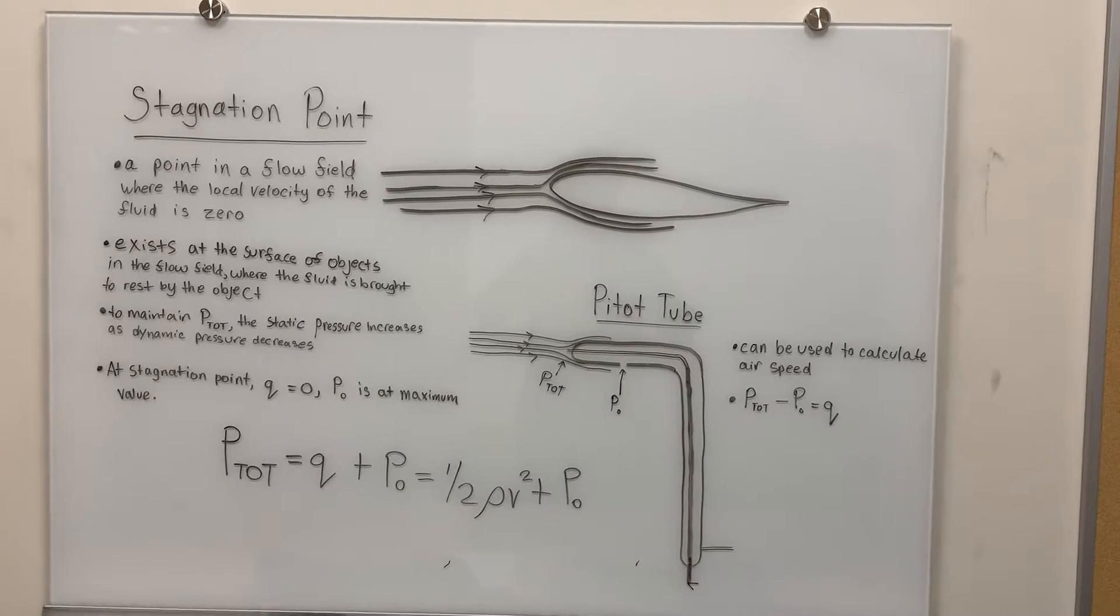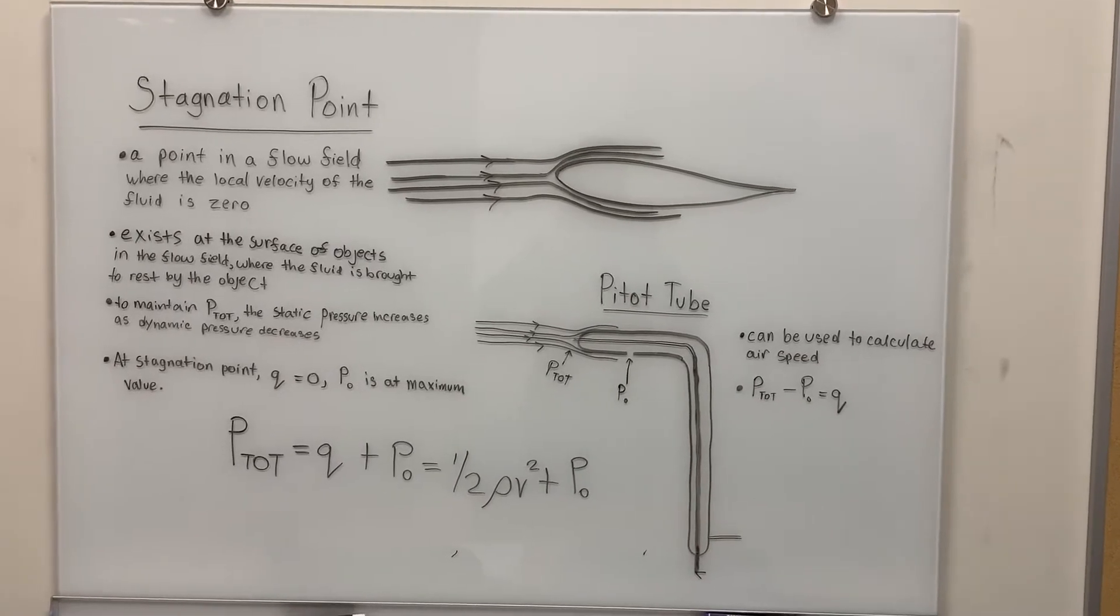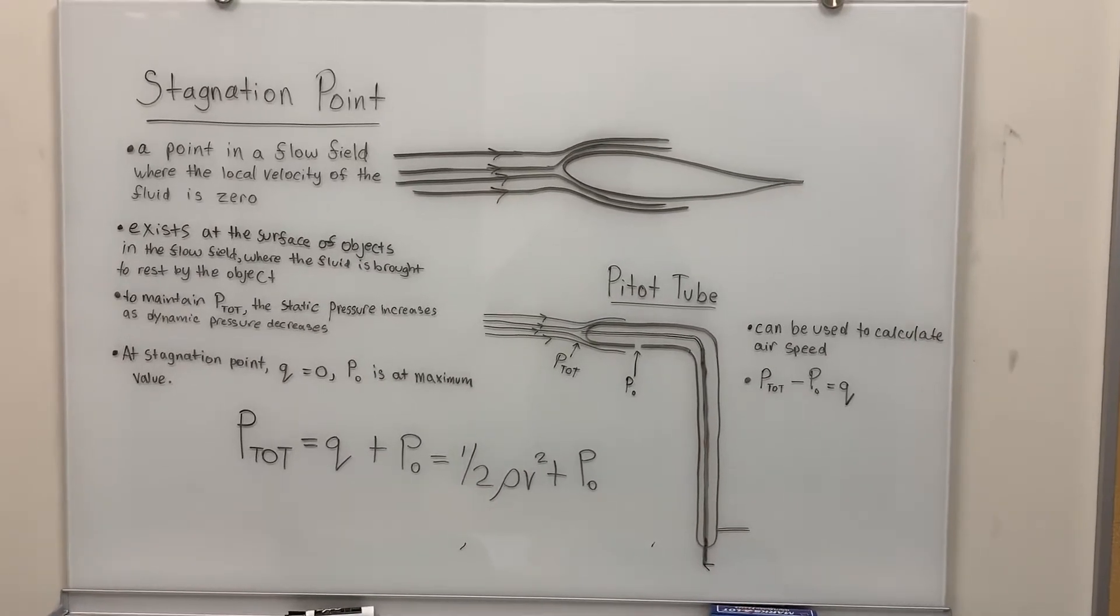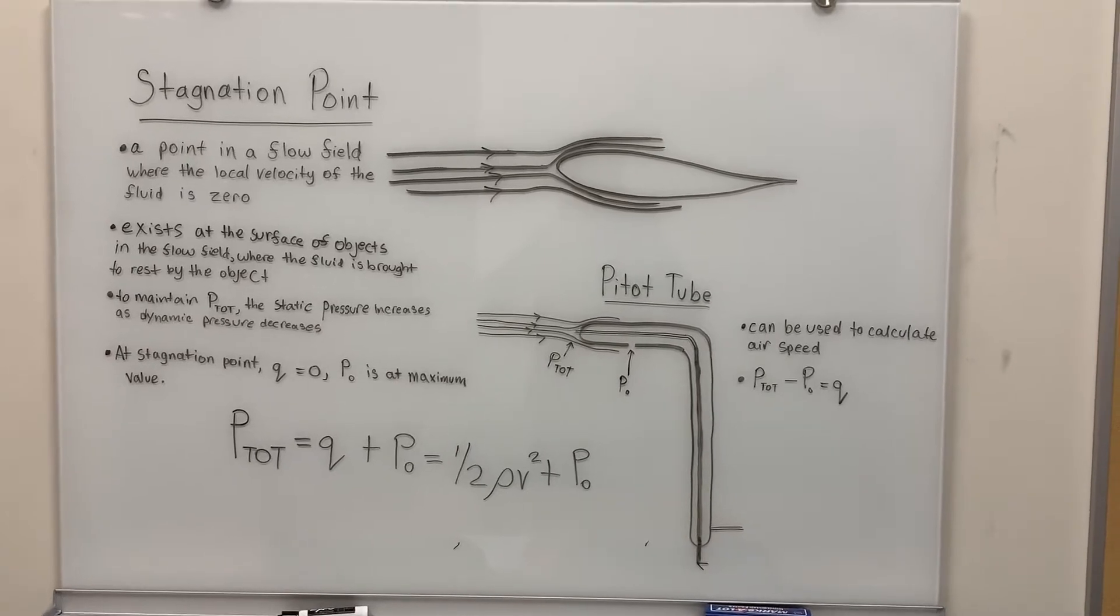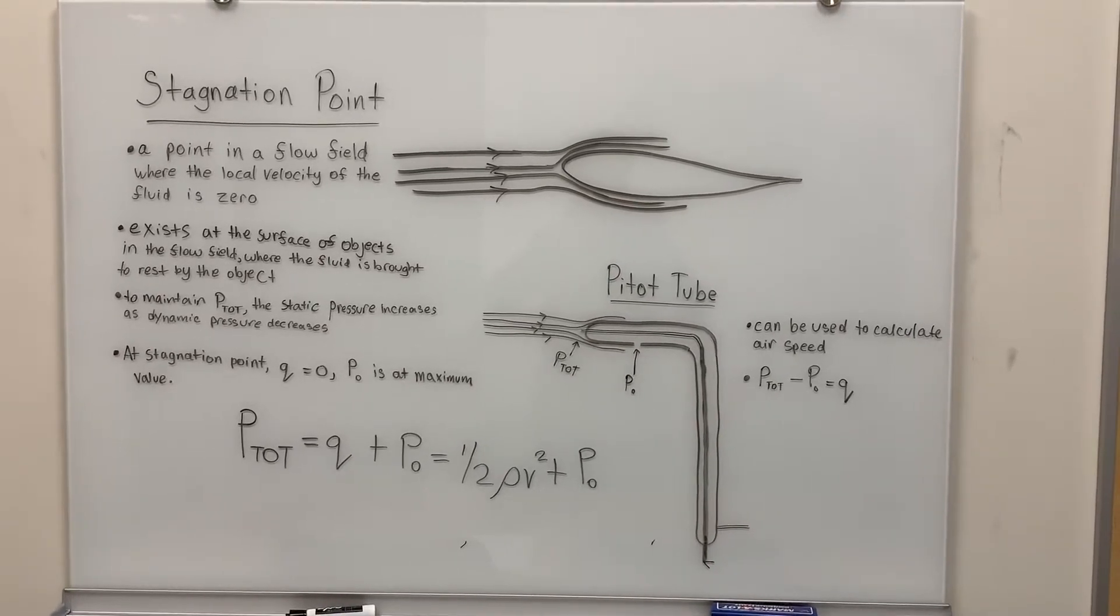The stagnation point is a point in a flow field where the local velocity of the fluid is zero. It exists at the surface of objects in the flow field where the fluid is brought to rest by the object.